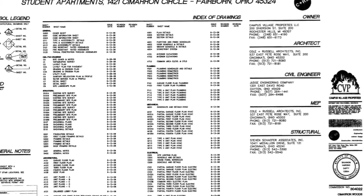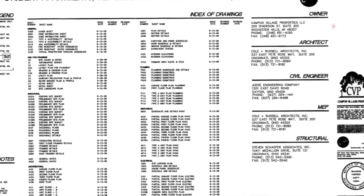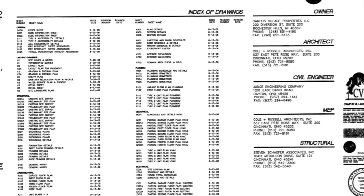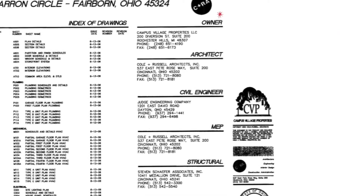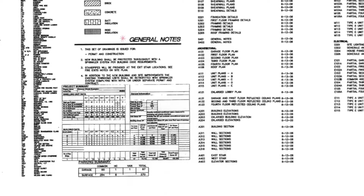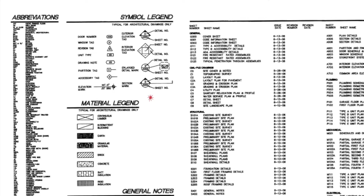Also identified on the title sheet are the parties involved in the project, such as the Owner, Architect, Civil Engineer, Mechanical, Electrical, and Plumbing MEP Engineers, and Structural Engineer. Additionally, items commonly found on the title sheet are Site Location Map, General Notes and Abbreviations, and Symbol and Material Legends.